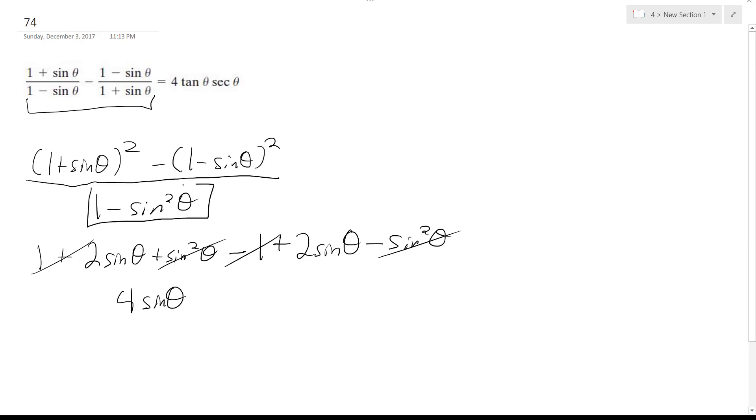And this right here is a trig property. It's also equal to cosine squared theta, so it becomes cosine squared theta.